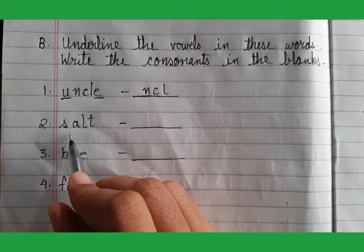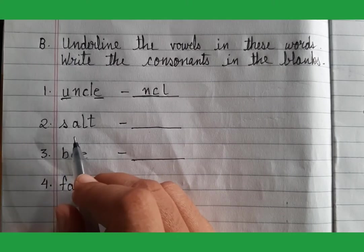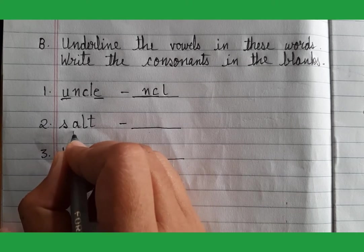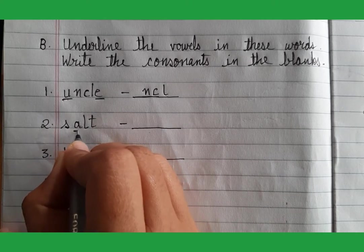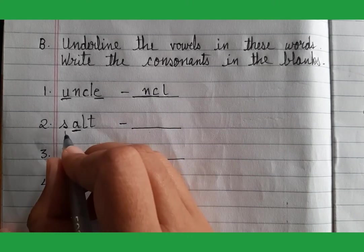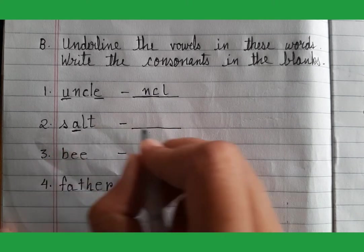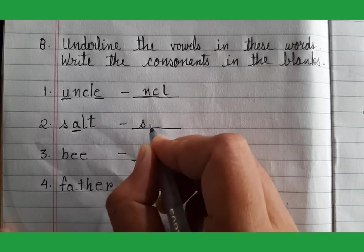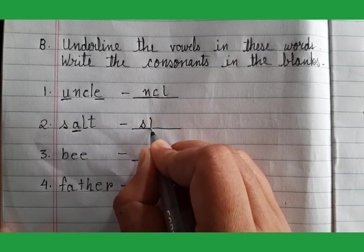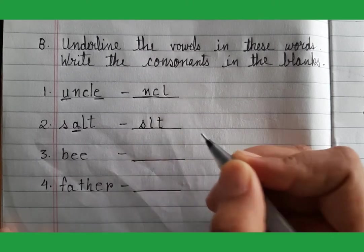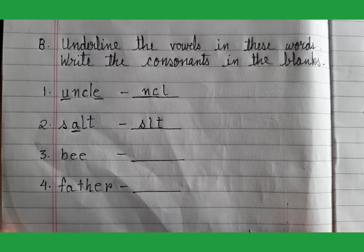Now next word is 'salt.' Which letter is a vowel? The letter A. And the remaining letters S, L, and T are consonants.